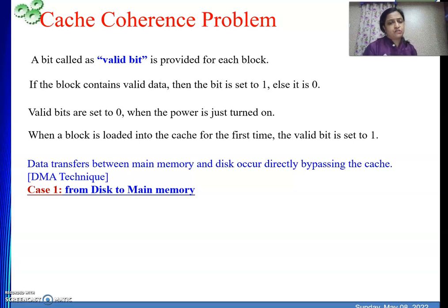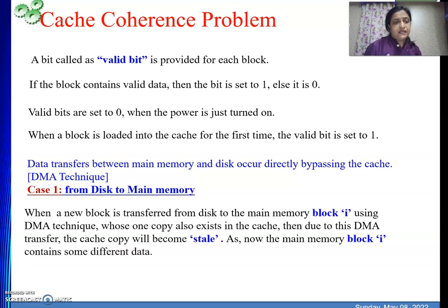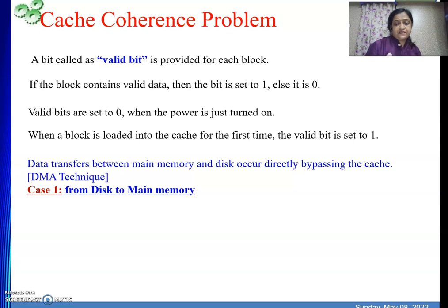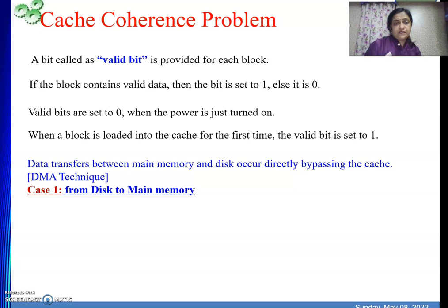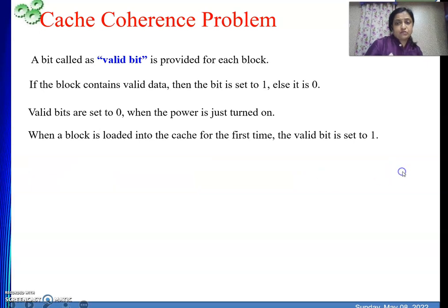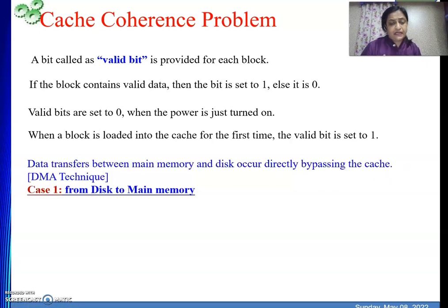First we discuss bringing data from disk to main memory. When we perform this DMA transfer, we are bypassing the processor and the cache as well. During DMA transfer we are not looking at what is in cache — we are transferring data directly between main memory and the disk, without considering the cache at all.